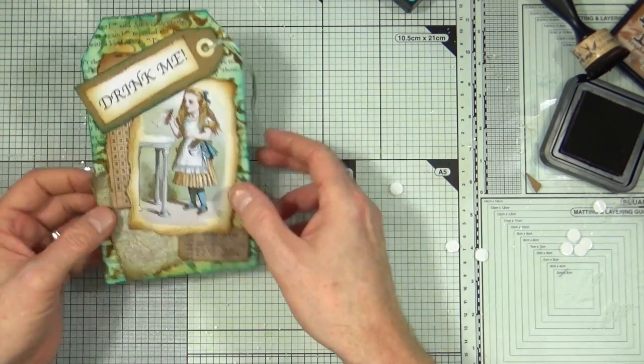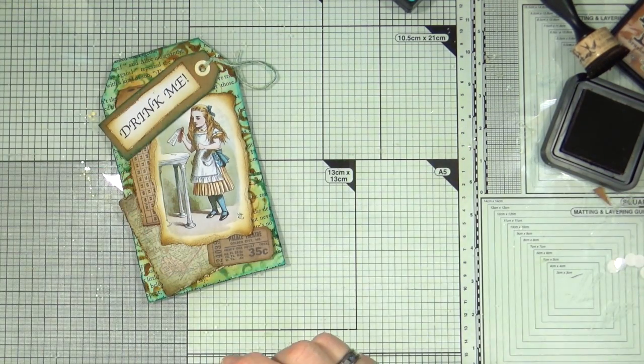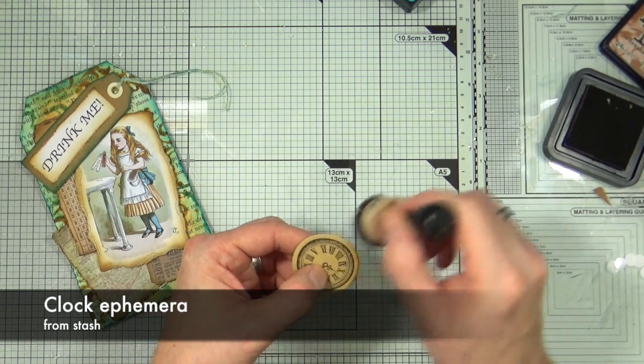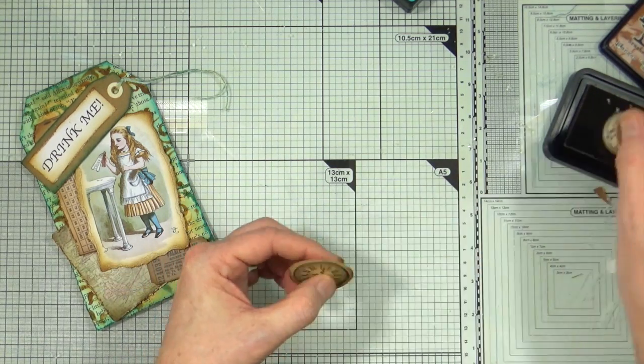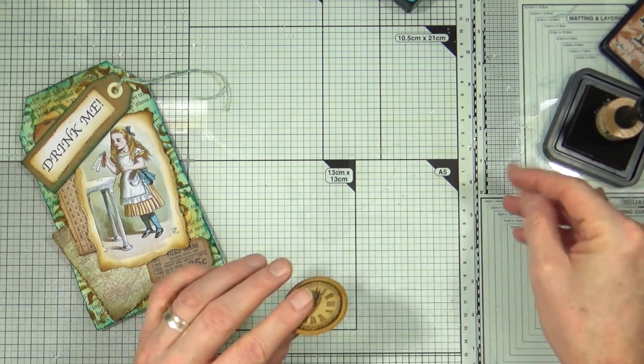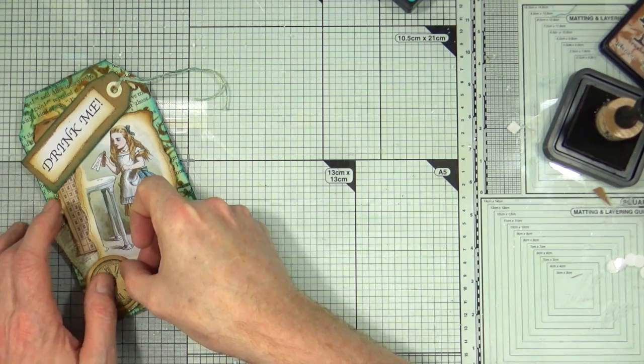I also want to add a few more embellishments to the front of the tag that are more in keeping with the Alice in Wonderland theme. For that I found a piece of clock ephemera in my stash that's been sat there for some time. I'm just going to distress the edges and then I'm going to stick it down onto the front of the tag. It already has a foam dot on the back.